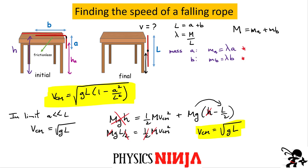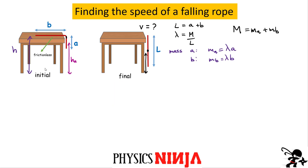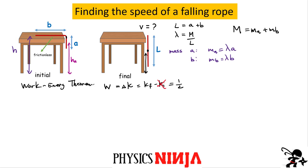Now I want to solve this problem from the perspective of the work done by gravity — applying the work-energy theorem. The work-energy theorem says the work done equals the change in kinetic energy, which is K_final minus K_initial. Since K_initial is zero, we have: Work = (1/2)·M·v_cm². All we need to calculate is the work done by gravity. Let's consider plotting the force of gravity versus the drop distance y.